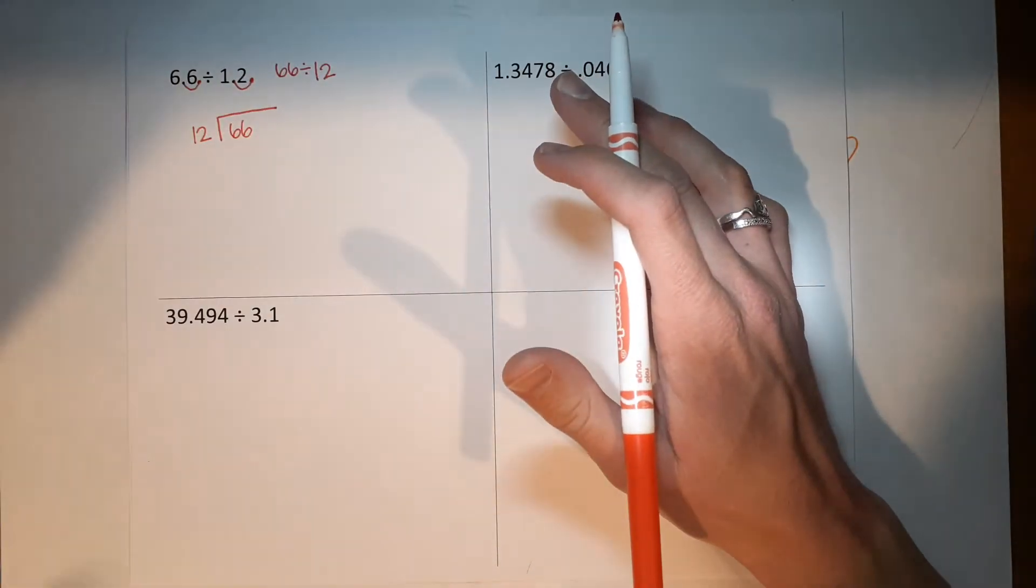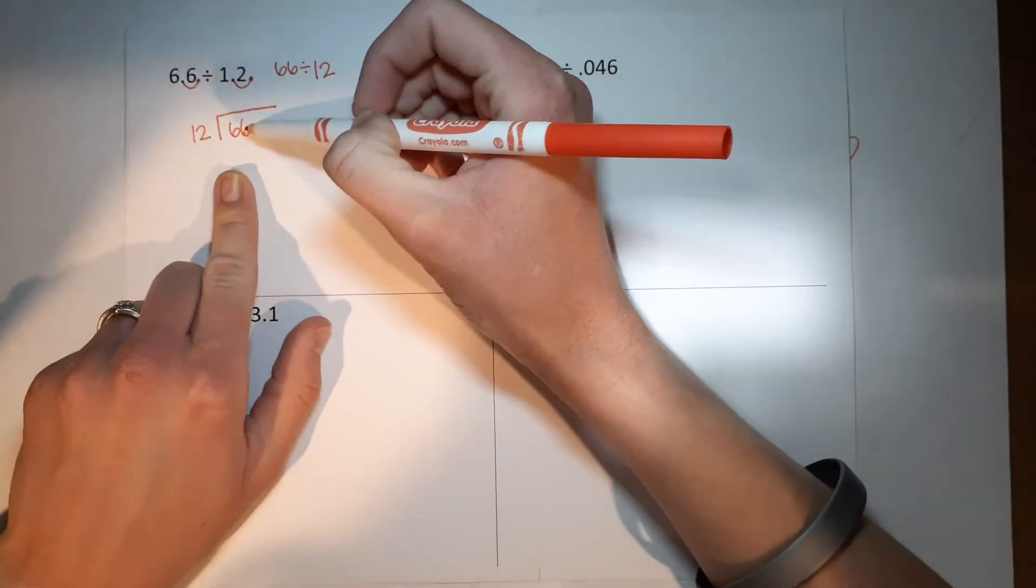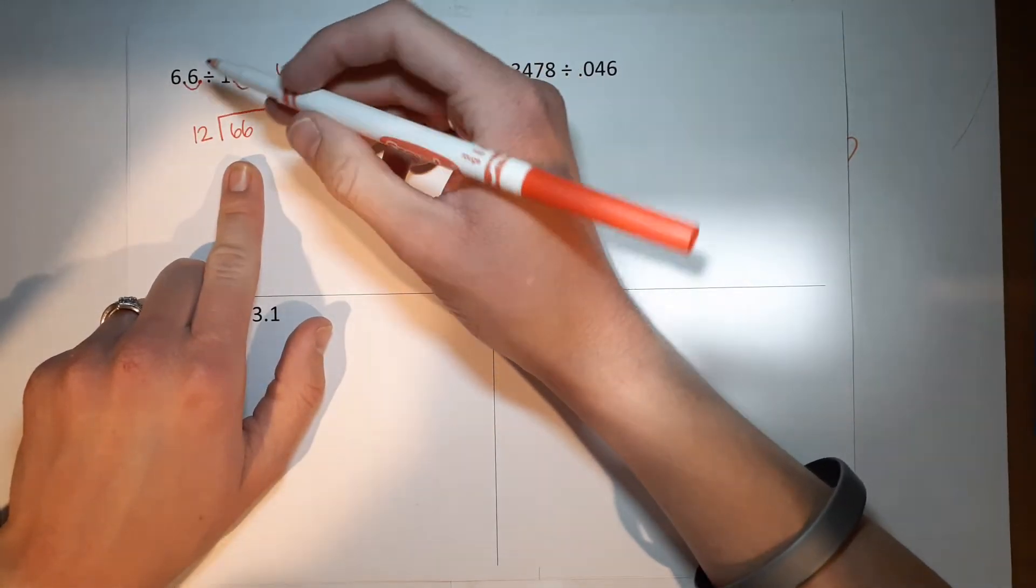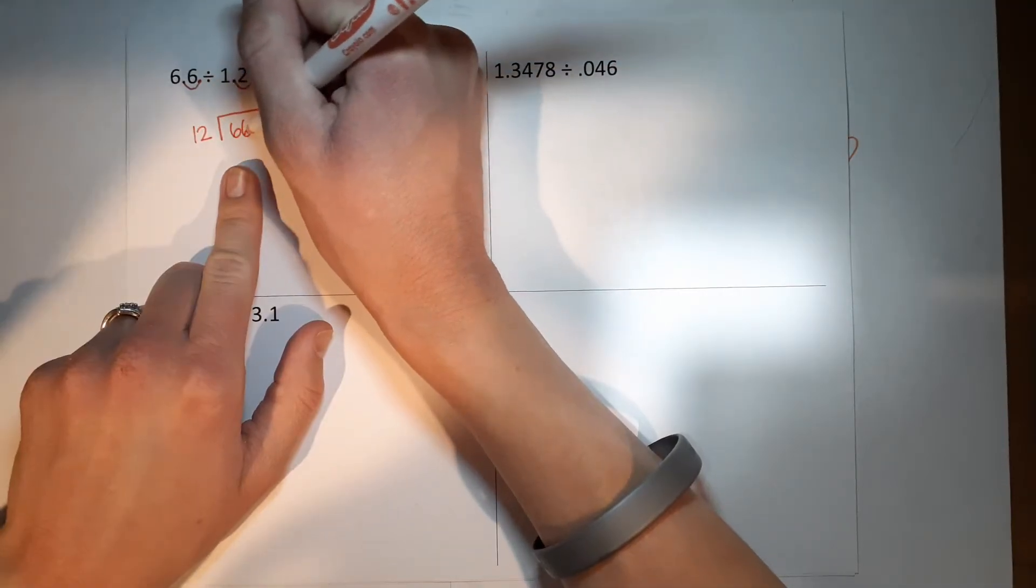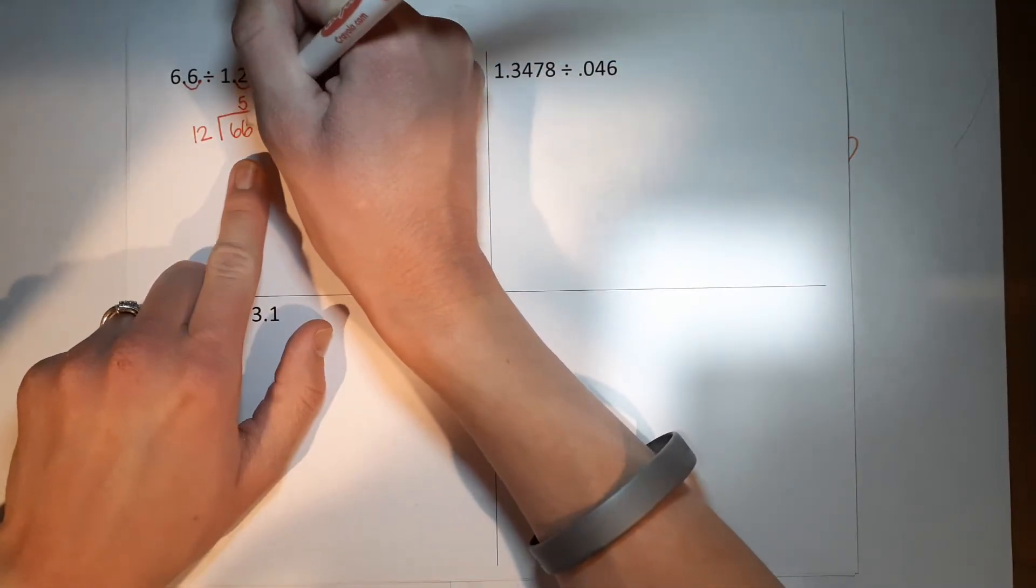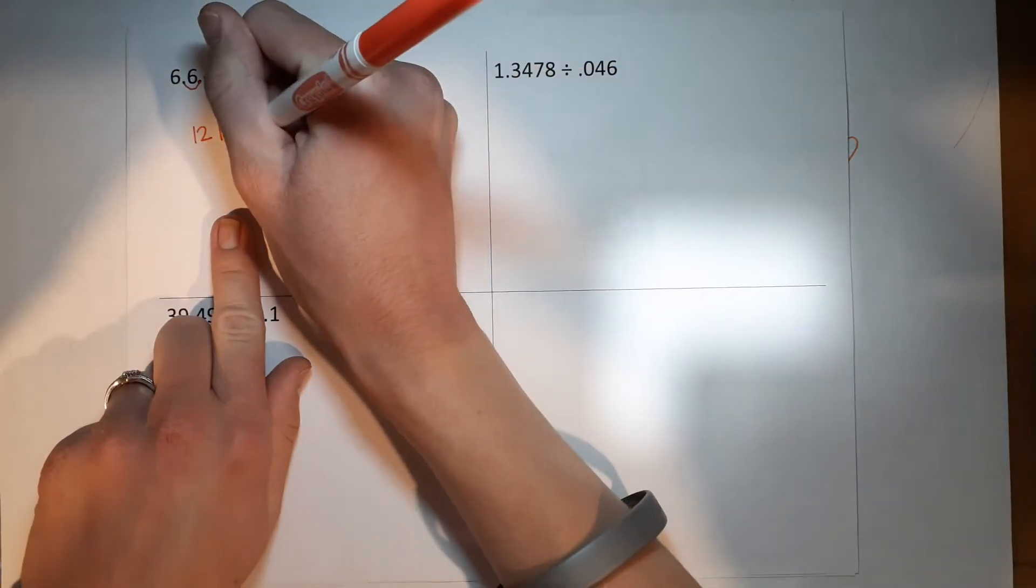So now I've got 12 into 66. 12 goes into 66, well, 12 times 5 is 60. So since I'm putting it into the 66, I put it over this 6. 5 times 12 gives me 60.